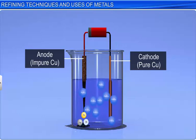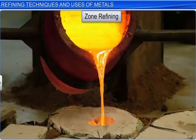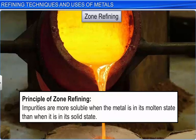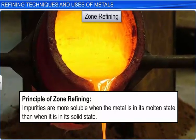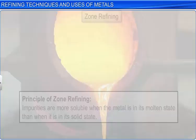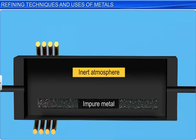Let's now study the zone refining technique. This technique is based on the principle that impurities are more soluble when the metal is in its molten state than when it is in its solid state. This technique is used for obtaining metal with very high purity. The process is carried out in an inert atmosphere to prevent the metal from getting oxidized.